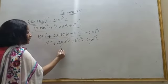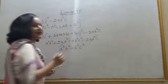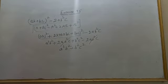So your answer will be A square B square plus B square C square. Clear?